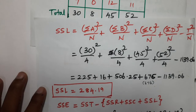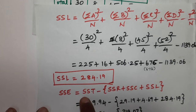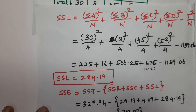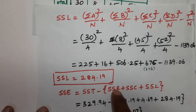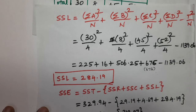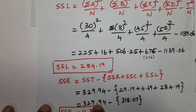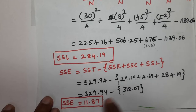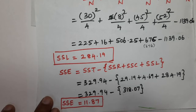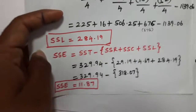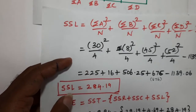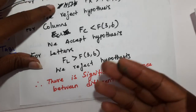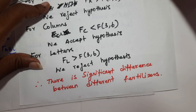Finally, SS_E equals SS_T minus all other contributions: SS_T − SS_R − SS_C − SS_L = 329.94 − 29.16 − SS_C − 284.19. The answer is SS_E = 11.89. This gives us all required sum of squares values for the ANOVA table to test differences between fertilizers and soil conditions.